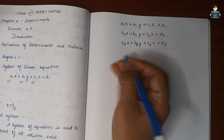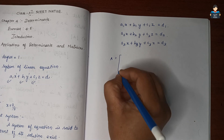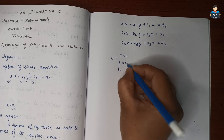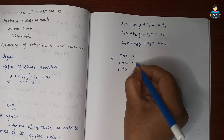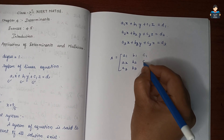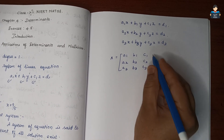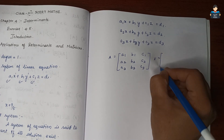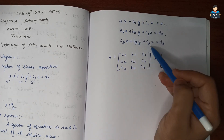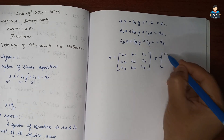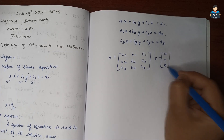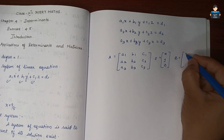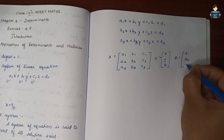We represent this in matrix form. The coefficient matrix A contains elements a1, a2, a3, b1, b2, b3, c1, c2, c3. The variable matrix X contains x, y, z. And matrix B is equal to d1, d2, d3.